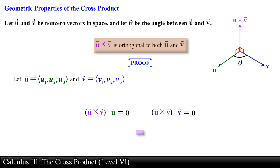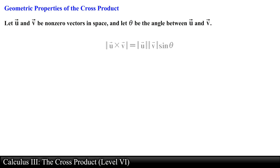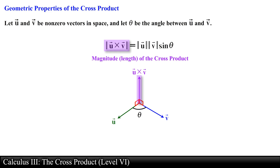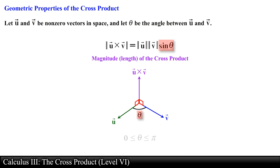Let's move to the next geometric property, which was also introduced in the first video of this series. Recall that we use the right-hand rule to determine the direction of the vector produced from the cross product of two vectors. This property is used to calculate the length or magnitude of that vector: the magnitude of vector u crossed with vector v equals the magnitude of vector u times the magnitude of vector v times sine of theta, where theta is an angle between zero and pi.